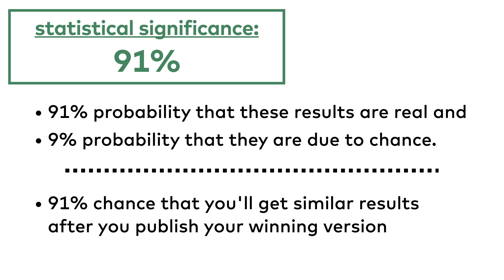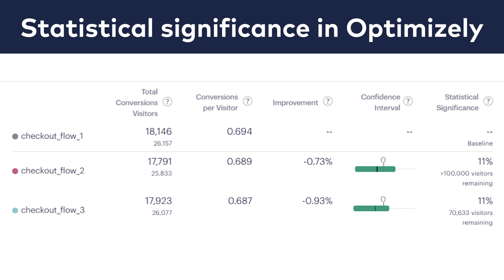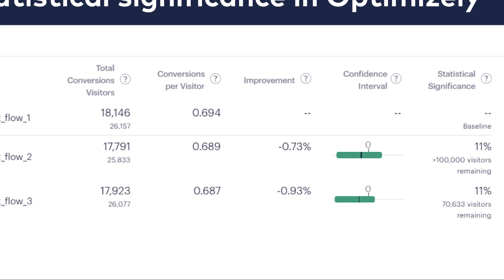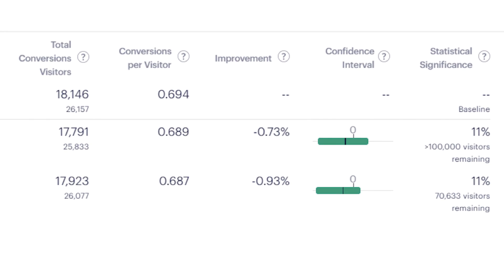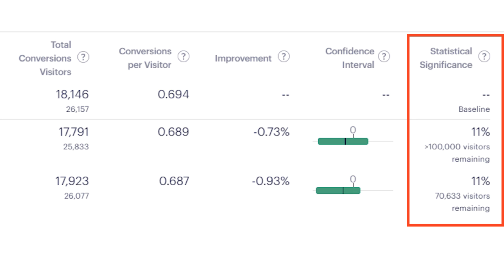In the next videos, I will talk about whether 91% statistical significance is enough or not. But first, let me show you how you can calculate statistical significance for yourself. Usually you don't have to — most tools do this for you. For instance, Optimizely, one of my favorite A-B testing tools, continuously recalculates and reports the level of significance of your running experiments.